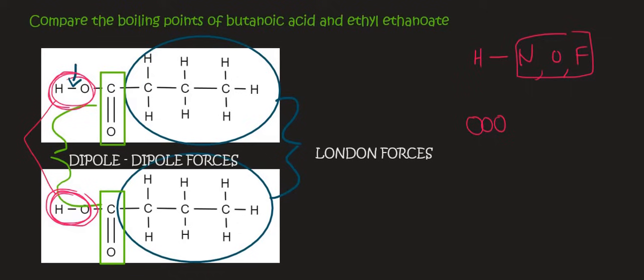So, butanoic acid has London forces, dipole-dipole forces, and hydrogen bonding. So it's going to have quite a high boiling point. In fact, if you Google it, it has a boiling point of 163.5 degrees Celsius. That is high. That is higher than water, which boils at 100.